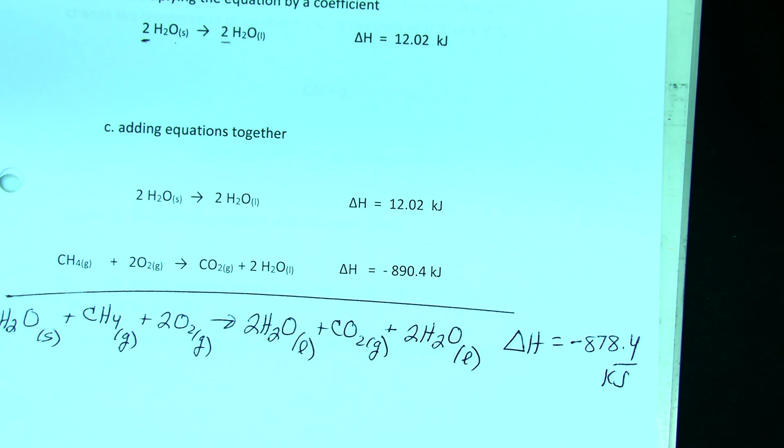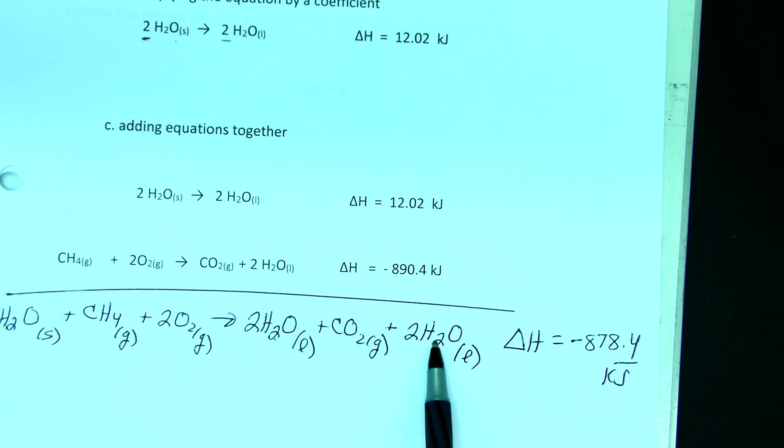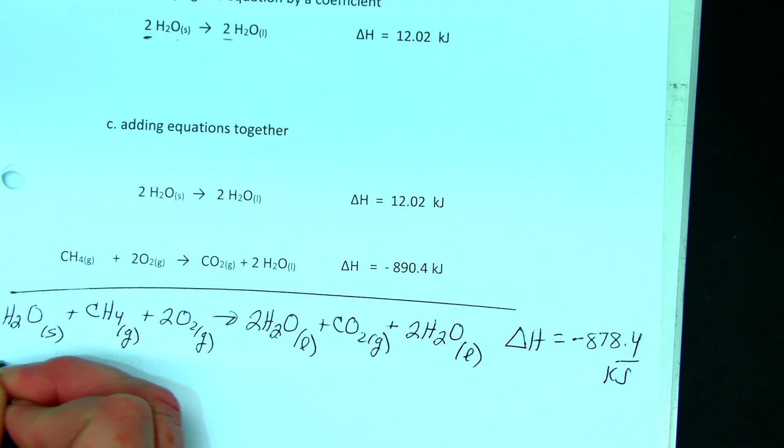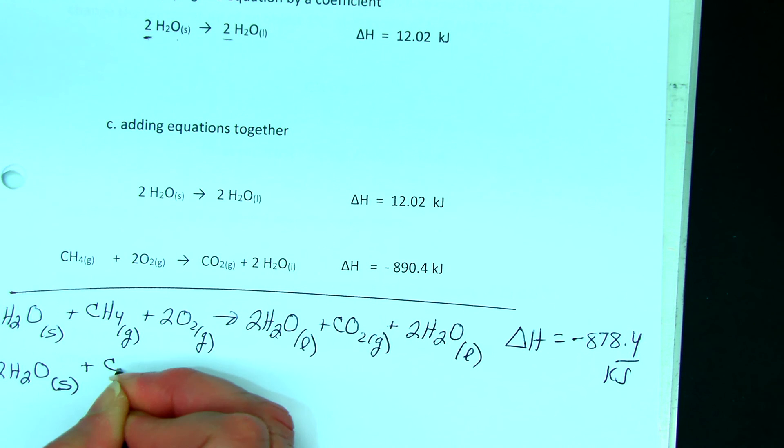Now if I look at this, I have 2 moles of solid water on the left. I have 2 and 2, I have 4 moles of liquid water on the right. I cannot cancel that from both sides because they are not the same thing. So when I rewrite this, I combine what's left. 2 moles of water solid, that is not the same as water liquid, so it doesn't cancel.